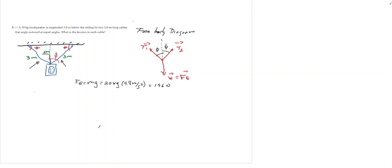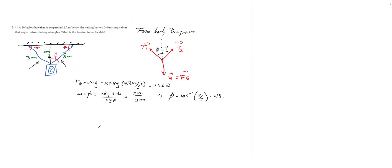Now we are going to use the trigonometric functions to calculate the angle phi. I know the side that is adjacent to angle phi — that is the side of 2 meters. I know the hypotenuse, which is the side of 3 meters, so I can say that the cosine of angle phi is equal to adjacent over hypotenuse, so it is equal to 2 meters over 3 meters. Therefore the angle phi is the cosine inverse of 2 over 3, so the angle phi will be 48.2 degrees.